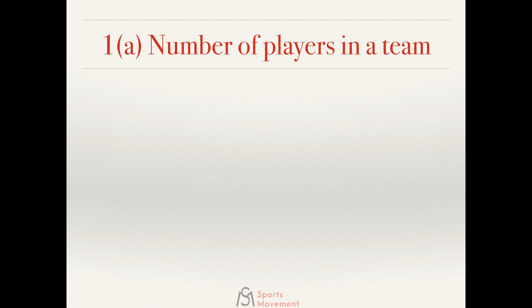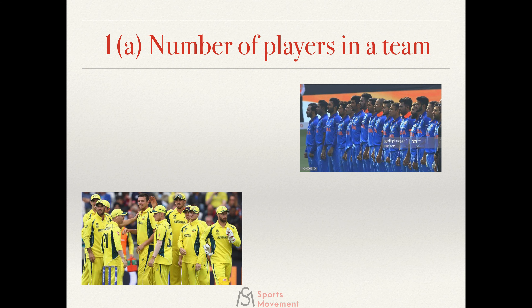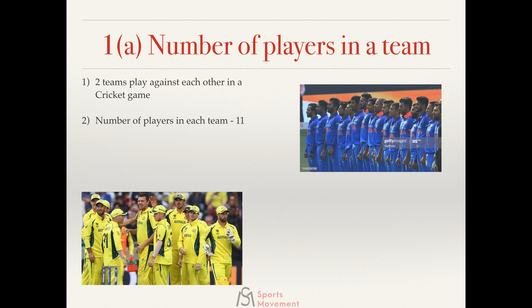We're going to start with something very basic — the number of players in a team. I'm sure most of you know that cricket is a game played between two teams: two countries, two clubs, two school teams for example, and the number of players in each team is 11. You can see team India on the top right and team Australia on the bottom left — 11 players from each side on the field.